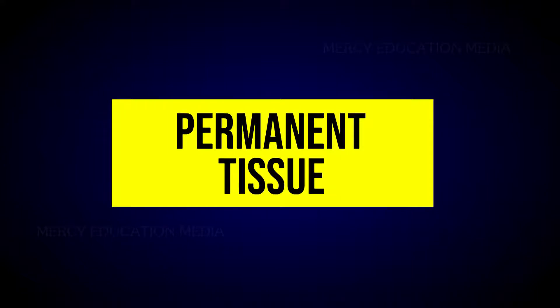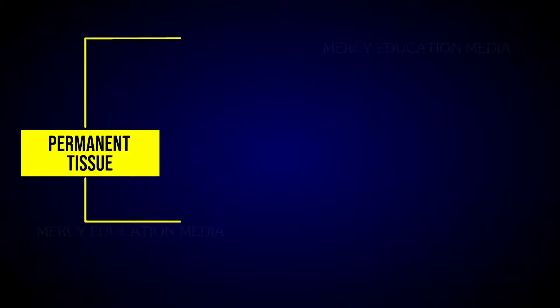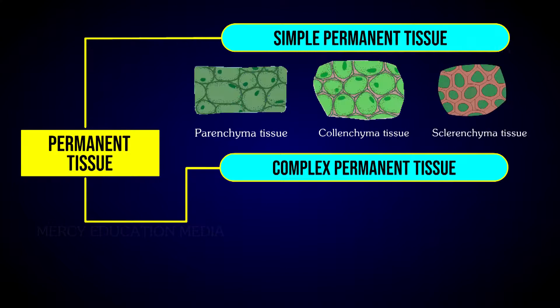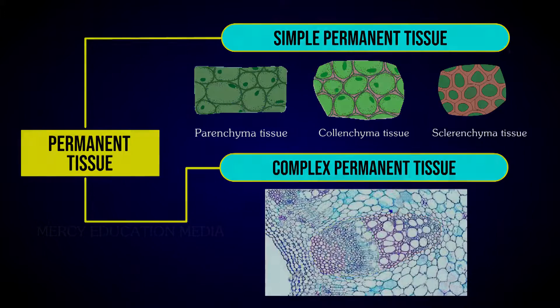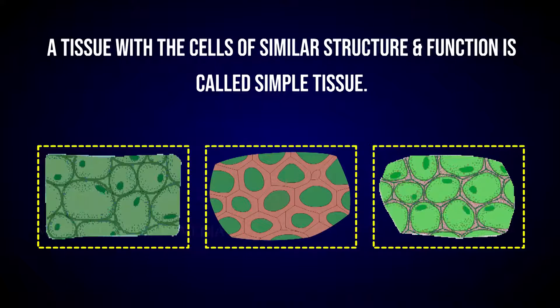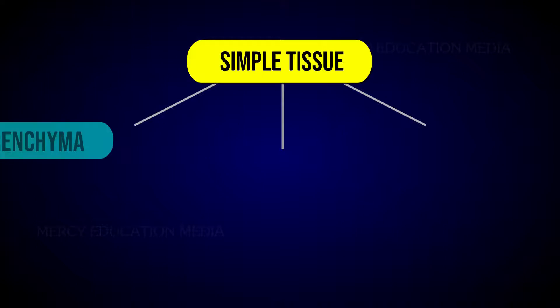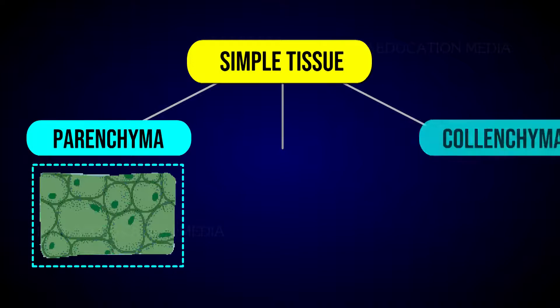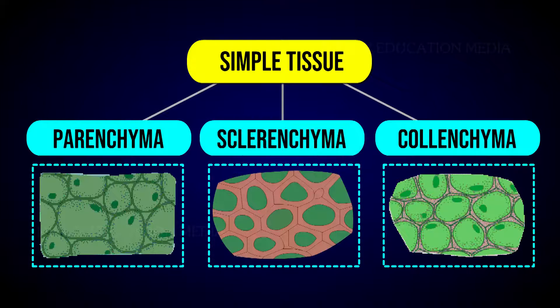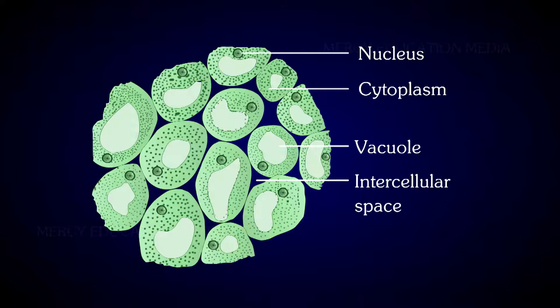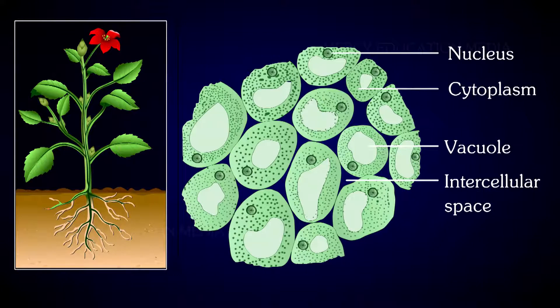Let us know about simple tissue. A tissue with the cells of similar structure and function is called a simple tissue. It is of three types: parenchyma, collenchyma, and sclerenchyma. How are parenchyma cells? It is generally present in all organs of the plant. It constitutes the ground tissue in a plant.